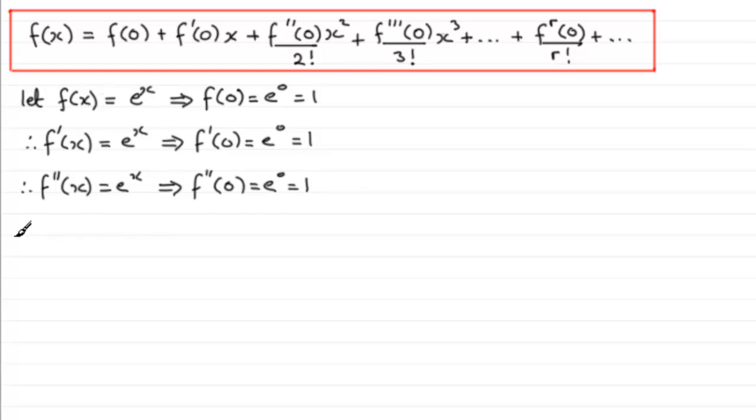And if we keep this going you'll find that f treble dash of x again that's going to be e to the x, and it follows that f treble dash of zero is going to equal e to the power of zero which is one.